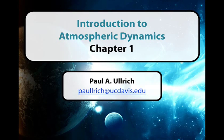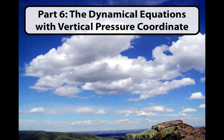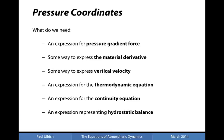Hello all, welcome back to the final part of chapter 1, where we will be discussing the dynamical equations with vertical pressure coordinate. This extends on the discussion from last time where we began by deriving a form of the pressure gradient force — the force initiating motion of fluid parcels — which is valid for a vertical pressure coordinate. However, in order to get a complete set of atmospheric fluid equations for a vertical pressure coordinate, there are still several pieces of the puzzle missing.